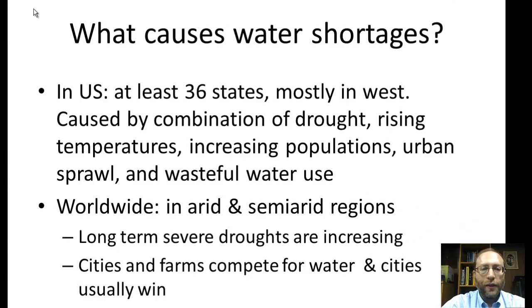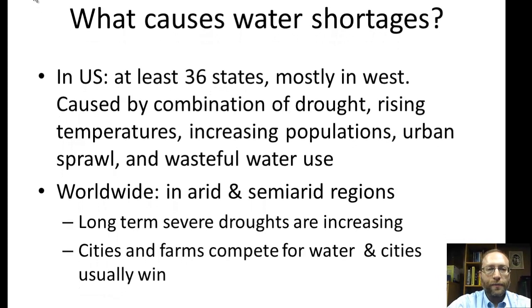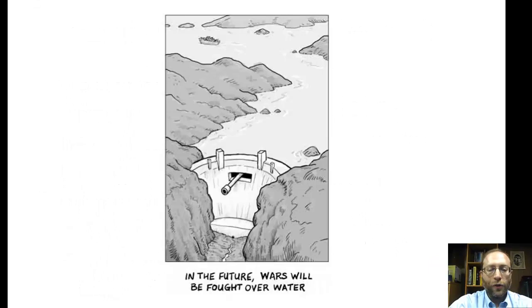Now in the U.S., water shortages occur in at least 36 states, mostly in the west. It's caused by a combination of drought, rising temperatures, increasing populations, urban sprawl, and wasteful water use. Worldwide it's found mostly in arid and semi-arid regions. Long-term severe droughts are increasing and will probably continue to increase as climate change increases. Cities and farms compete for water, and the cities usually win. In the future, wars will be fought over water.